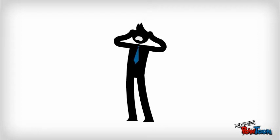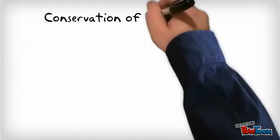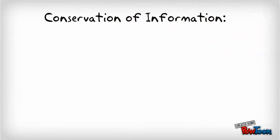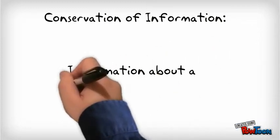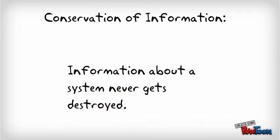This of course made them freak out. One thing which made them freak out was the conservation of information, a deep law which said that information about the system never gets destroyed.